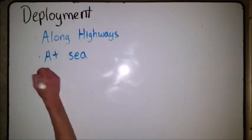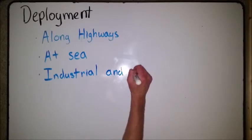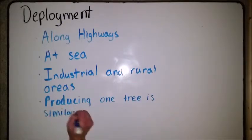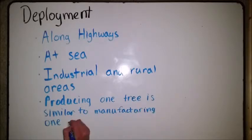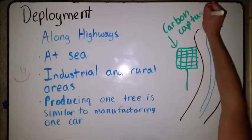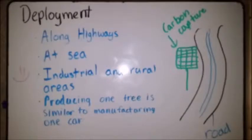Then there is deployment. There are many places that artificial trees can be placed. They can be placed along highways, they can be placed at sea, and they can be placed in industrial and rural areas. In the future, production of one artificial tree could become similar to manufacturing a car.